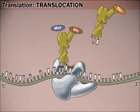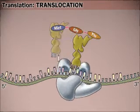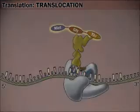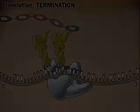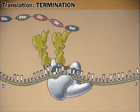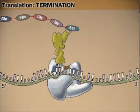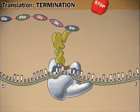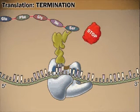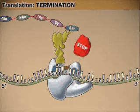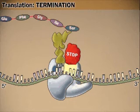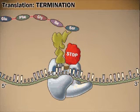The process repeats itself, lengthening the polypeptide, until the complex arrives at the stop codon. A termination protein attaches instead of a charged tRNA. The complex breaks down, releasing the completed polypeptide.